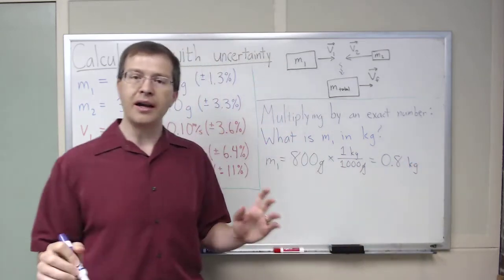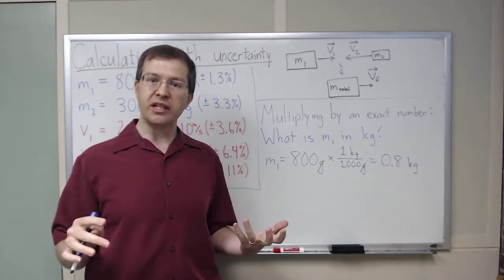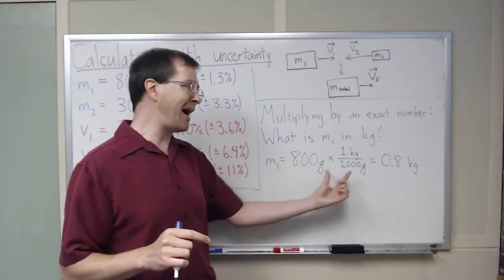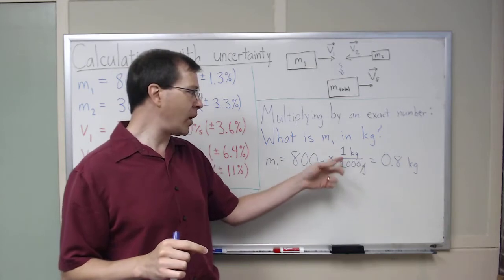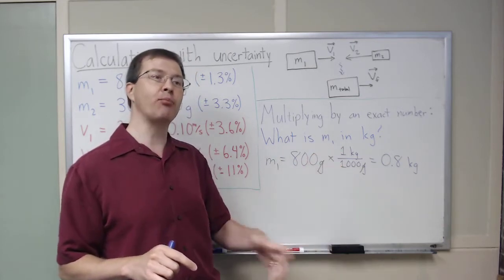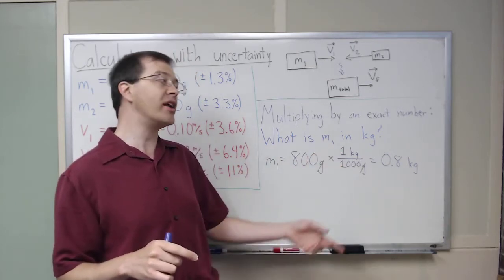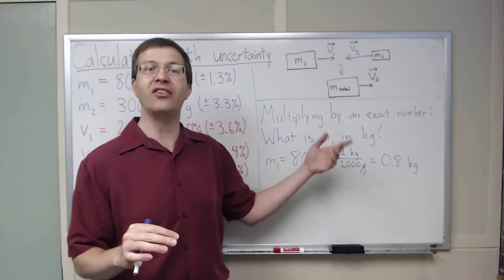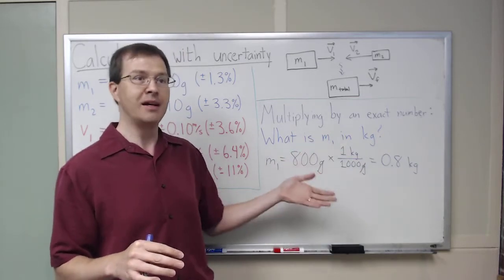That's what we're doing. And when we're working with uncertainties, this is an example of a calculation where we're multiplying our measured quantity by an exact number. That 1 kilogram equals 1,000 grams is not approximate. That's an exact number. There's no uncertainty in that. It's not like it might be 1,000.237 kilograms per kilogram. This is a definition.